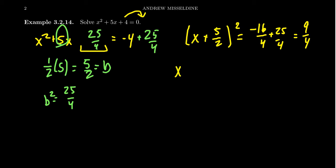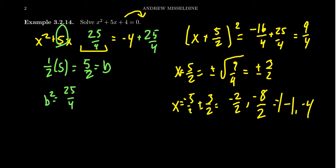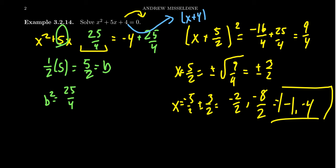Taking the square root of both sides, we get x plus 5 halves equals plus or minus the square root of 9 fourths. The square root of 9 fourths is a perfect square — that'll just become 3 halves. So x equals negative 5 halves plus or minus 3 halves. If we take plus 3 halves, that's negative 2 halves. If we take minus 3 halves, that's negative 8 halves, giving us the solutions negative 1 and negative 4. Of course, if we compare that to how we might have done this by factoring — factors of 4 that have to sum to 5 — you get (x plus 4)(x plus 1), which gives the same solutions, negative 1 and negative 4. So again, factoring in both these situations turned out to be much more advantageous.